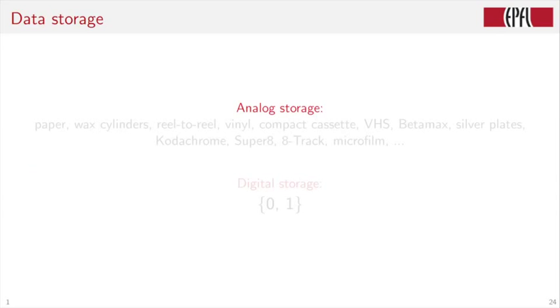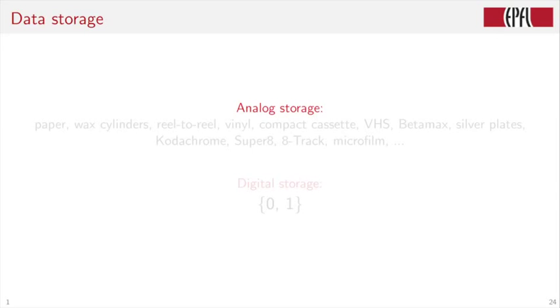So data storage, which is of course very important, used to be purely analog. You had paper, you had VAC cylinders, you had vinyl, you had compact cassettes, VHS, etc. In imagery, you had Kodachrome, slides, Super 8, film, etc. Very complicated. A whole biodiversity of analog storages.